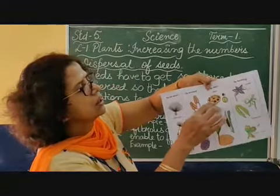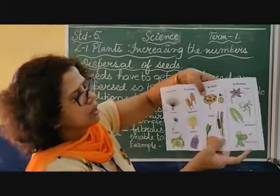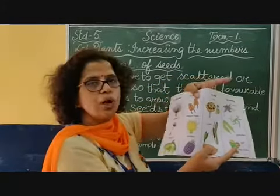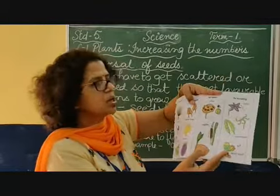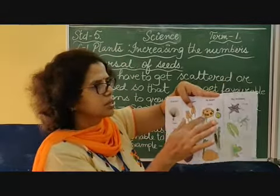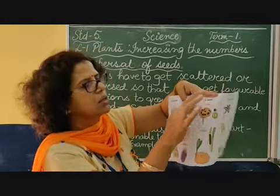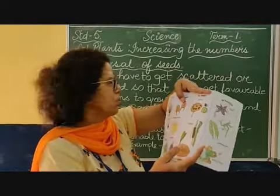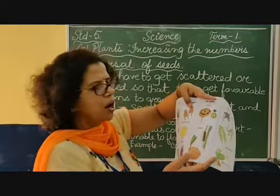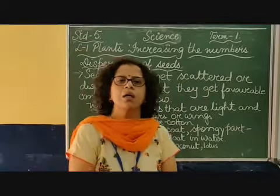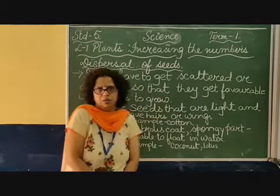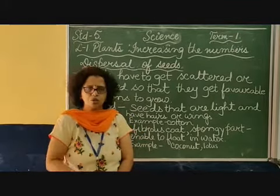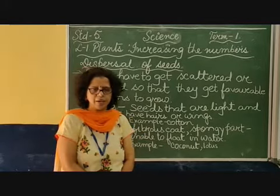Can you see this picture? The examples of seeds dispersed by water are coconut and lotus. The lotus has a structure that floats. Coconut also has a spongy part, and that is why it helps the seed to float in the water. So this is the second agent — water.